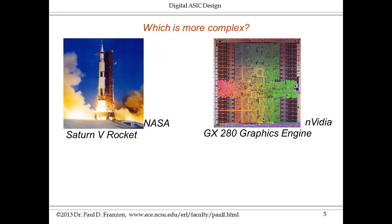Here are two of the crowning technological achievements of the 20th century, though the graphics engine comes from this century. You can consider these are two of the few big, huge engineered achievements: the Moon program, as typified by the Saturn V rocket, and silicon, as typified by this graphics engine on the right. I'll ask you the question: which is more complex?